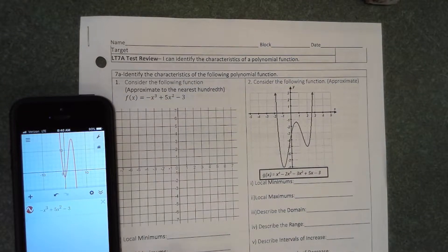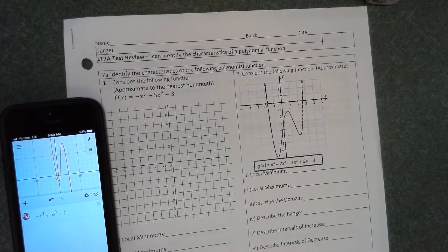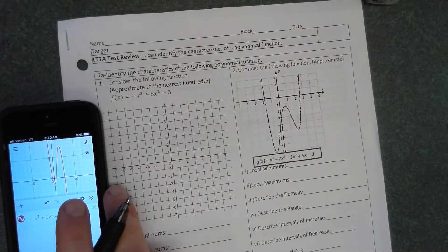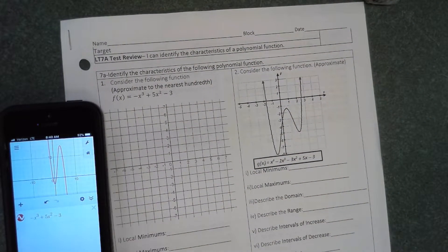Hello, welcome to the Unit 7 test review. Unit 7A is going to be on characteristics of polynomial functions. We're going to have a question that is very similar to number one where you have to enter the equation. I would just recommend entering it right into Desmos.